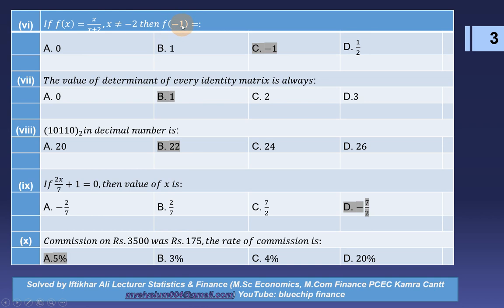The value of the determinant of every identity matrix is always equal to 1. Binary 10110 in decimal is the correct option: 22. If 2X over 7 plus 1 plus 1 equals 0, then the value of X equals — the correct option is minus 7 over 2. MCQ number 10: commission on rupees 3500 was rupees 175, so the rate of commission is 5%.